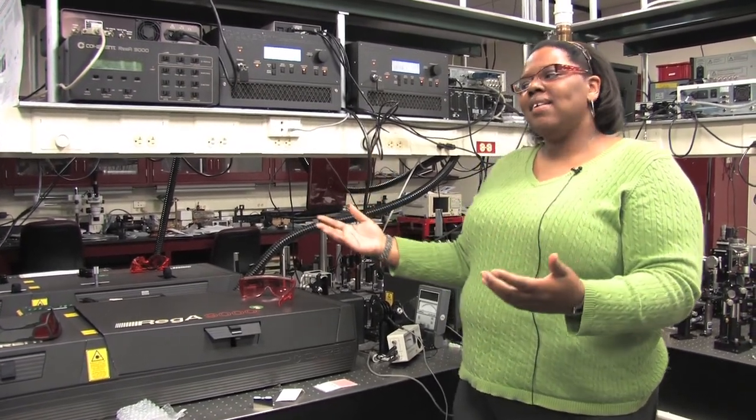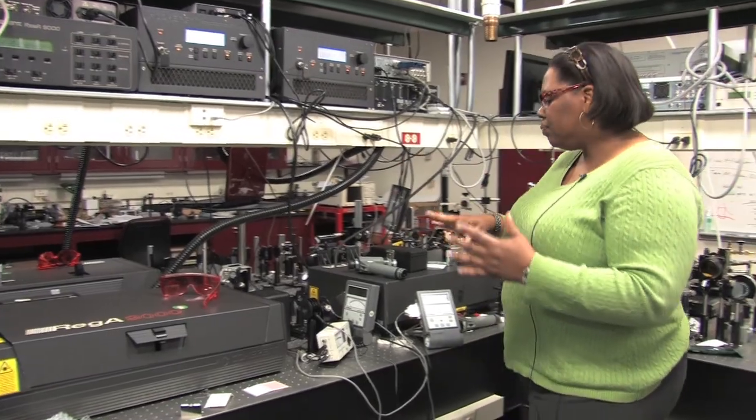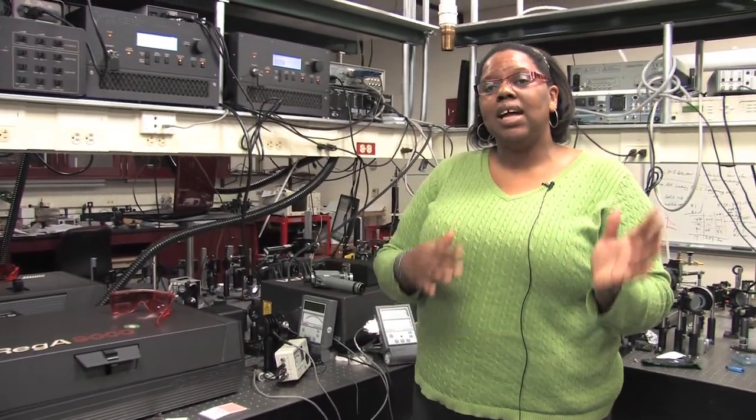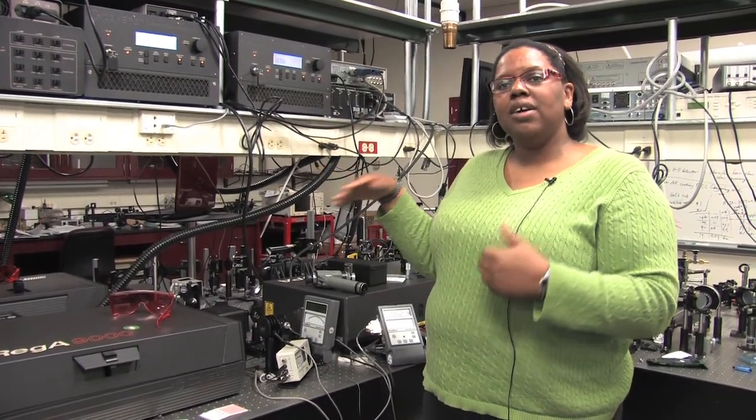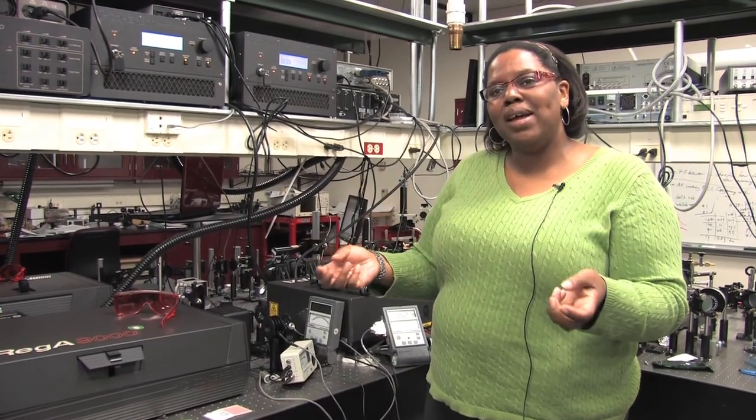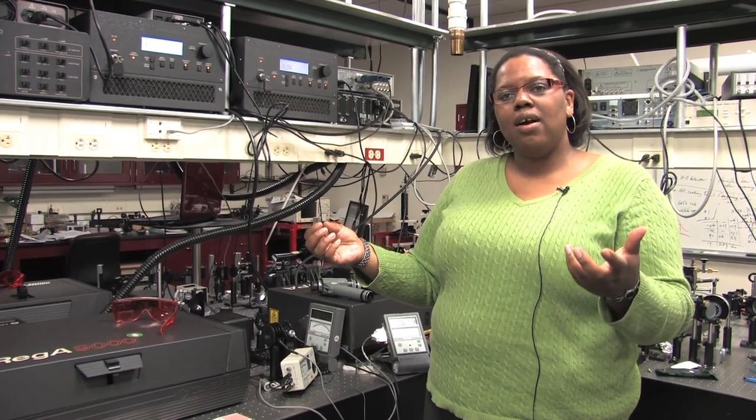And then we take that and we couple that into an optical parametric amplifier, which allows us to extend the wavelength out to 2 microns. This OPA, the optical parametric amplifier, emits two wavelengths. These are the two wavelengths that we use right now set at 1.3 micron and 2 micron. We use that to generate the mid-IR beam.